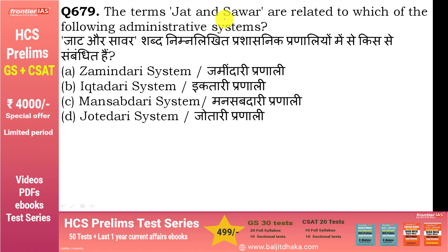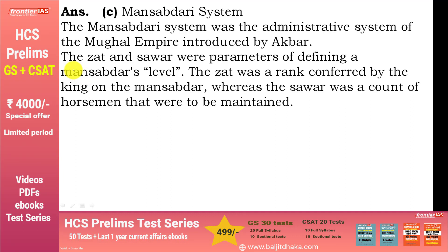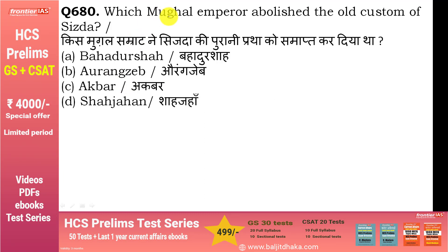The terms Zat and Sawar are related to which administrative system? — Mansabdari system. अकबर ने Mansabdari system introduce किया: Zat वो rank थी जो mansabdar को दी जाती थी, और Sawar वो थे जो की कितने घुड़सवार उसके अंडर काम करते हैं — यानि कितने घुड़सवारों को वो maintain करता था.